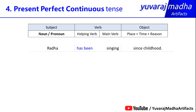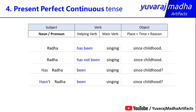Another example: 'Radha has been singing since childhood.' This means singing has been a habit since childhood and it continues. Negative: 'Radha has not been singing since childhood.' Interrogative: 'Has Radha been singing since childhood?' Negative interrogative: 'Hasn't Radha been singing since childhood?'